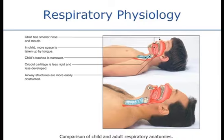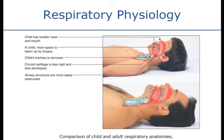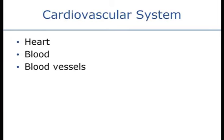All those things — the larger tongue, the smaller mouth, the shorter trachea, the narrower trachea — make the child more prone to airway obstruction if they're unconscious and lying flat on their back. Also, their occiput — the back part of their head — can be very large, causing the child to tilt forward. They can hyperflex when they lie flat, which will also cause an airway obstruction.